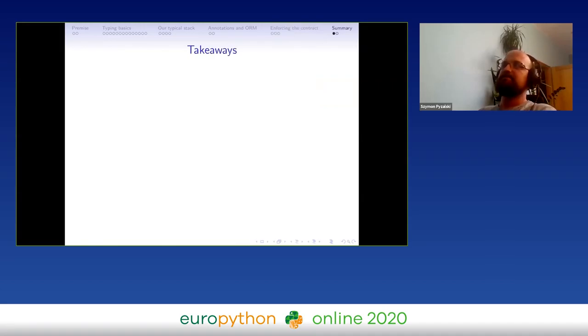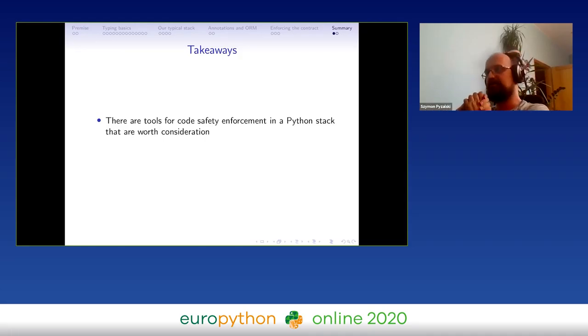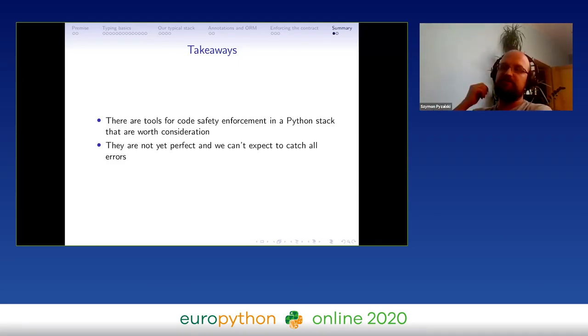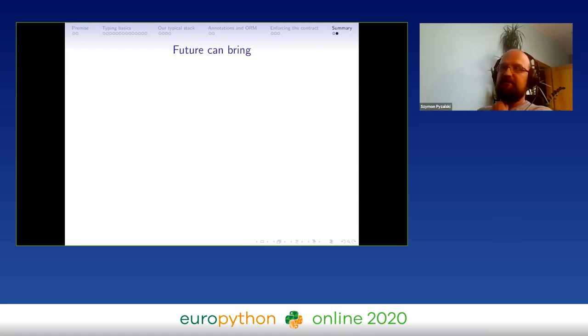So what are our takeaways from this demo? There are tools for code safety enforcement that we can use in a whole Python stack, and they are worth consideration. The benefits I believe from them for any big project outweigh the costs of introducing them. However, they are of course not perfect. We can't expect them to catch all the typing errors. Due to this inherently dynamic character of Python, we would probably never be able to do this. However, we can do a lot with them.